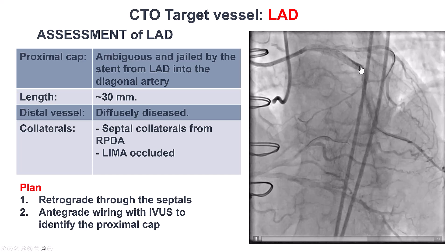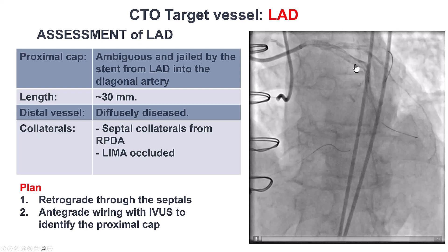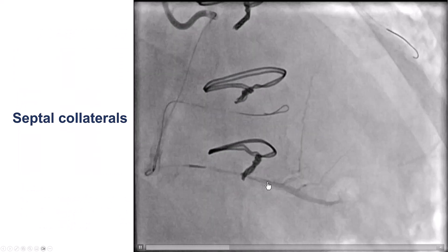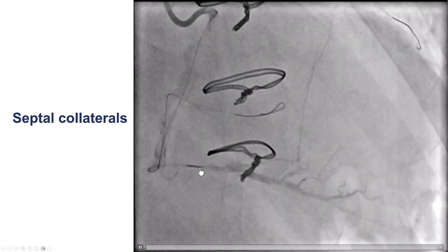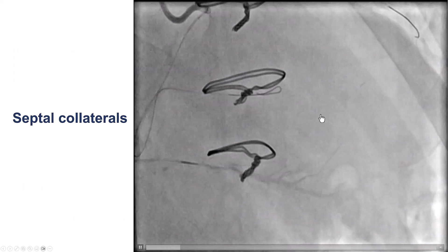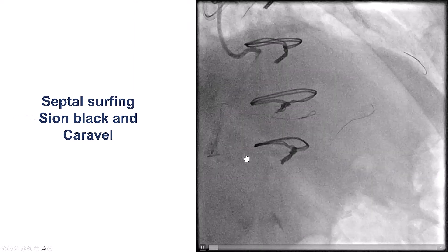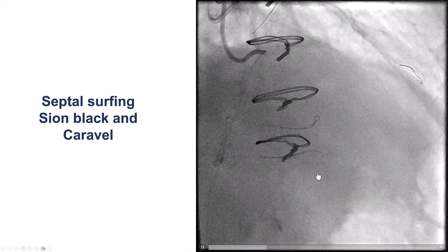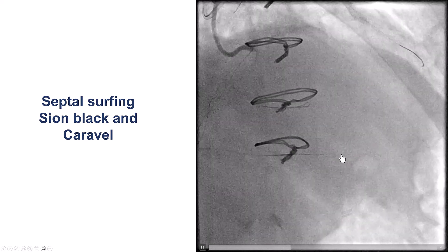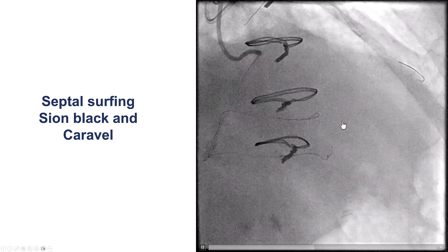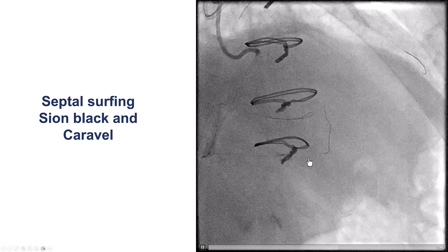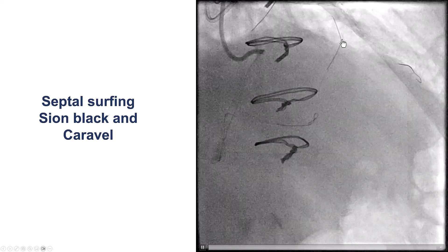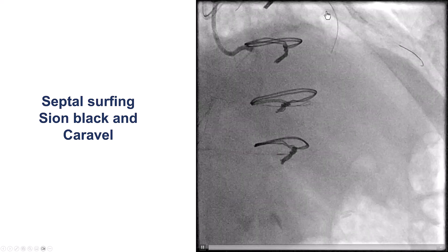It was very challenging to visualize through the previously placed stents. This is a tip injection through a microcatheter which shows nice septals going towards the LAD. We did surfing using a Corsair and a Caravel guidewire, and doing that we were able to find a pathway leading all the way into the LAD. These were septal collaterals and we were able to advance a guidewire into the mid-LAD.